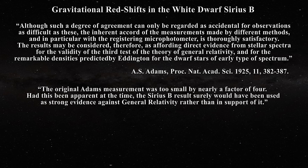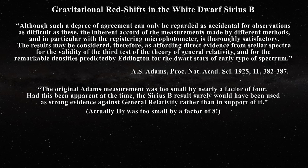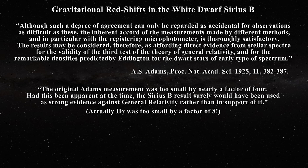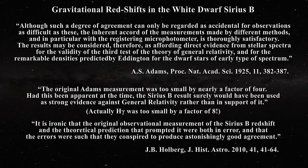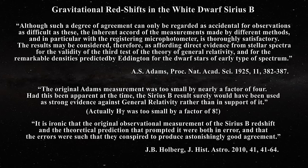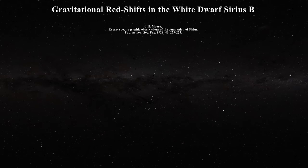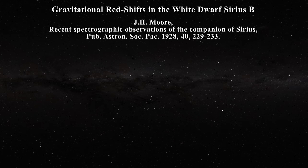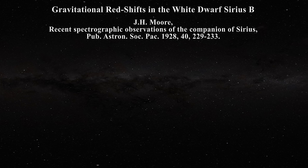Here is how Holberg put it: 'The original Adams' measurement was too small by nearly a factor of 4. Had this been apparent at the time, the Sirius B result surely would have been used as strong evidence against general relativity rather than in support of it.' He goes on: 'It is ironic that the original observational measurement of Sirius B redshift and the theoretical prediction that prompted it were both in error, and that the errors were such that they conspired to produce astonishingly good agreement.' Within a few years, Moore published a paper exactly agreeing with Adams — but that paper was also an error.